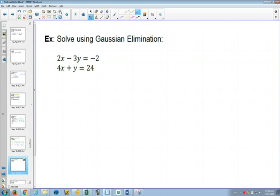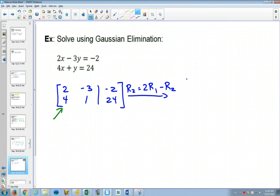So for our second one here, 2, negative 3, 20, negative 2, 4, 1, 24. How could I make this one a 0? I multiply the top by 2 and then subtract. So 2 row 1's subtract row 2. So row 1 isn't changing.